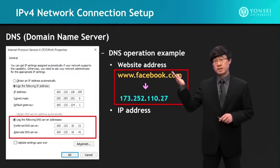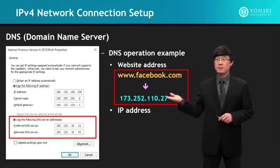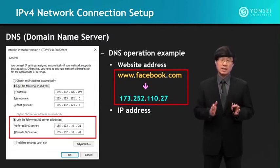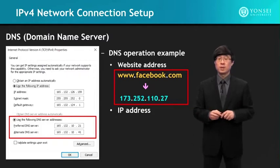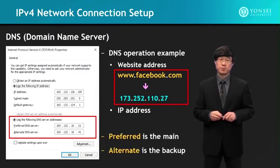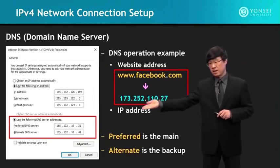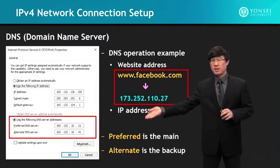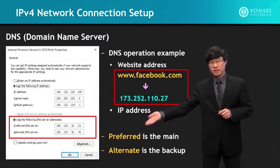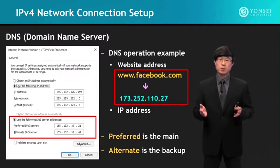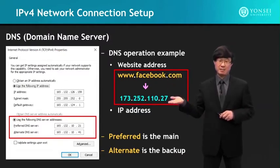DNS operates by converting www.facebook.com into an IP address. We need the IP address in order to route the packet to the server, such that the server can respond back with the information we want. There is a preferred DNS server, which is the main one, and an alternate DNS server, which is the backup — these two support your connectivity by changing domain names into IP addresses.